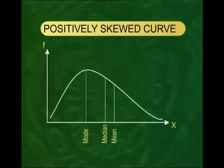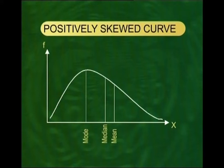As you now see on the screen, in the case of a positively skewed distribution, a very important point to note is that the distance between the median and the mode is approximately double the distance between the median and the mean. Algebraically, this can be expressed as: median − mode ≈ 2 × (mean − median).